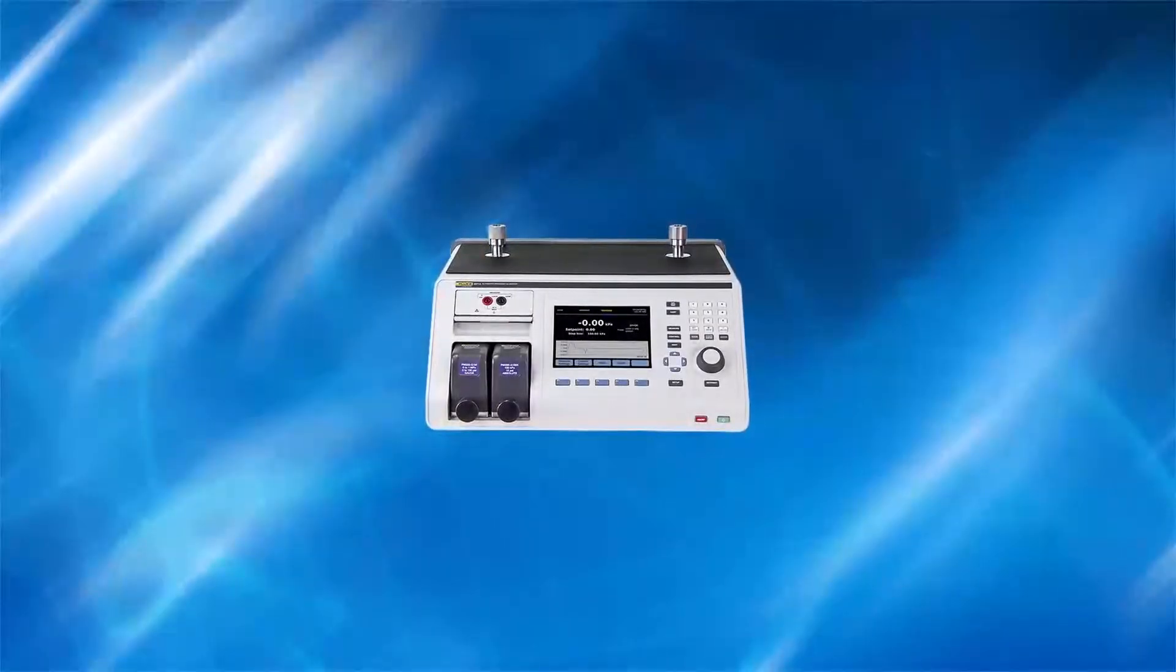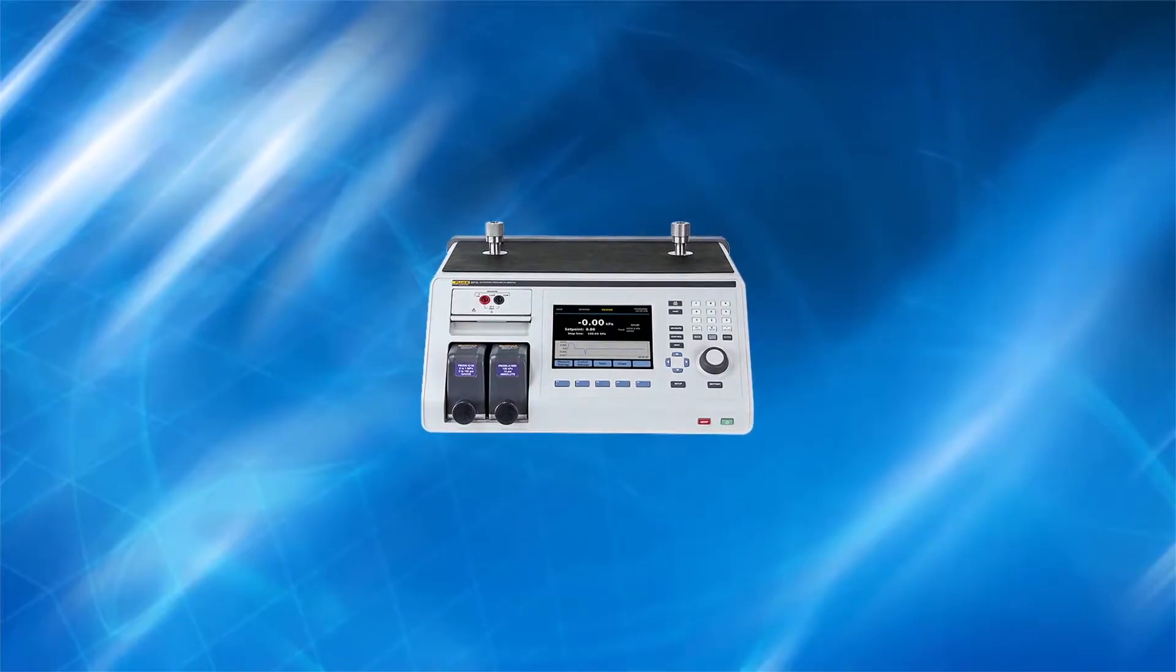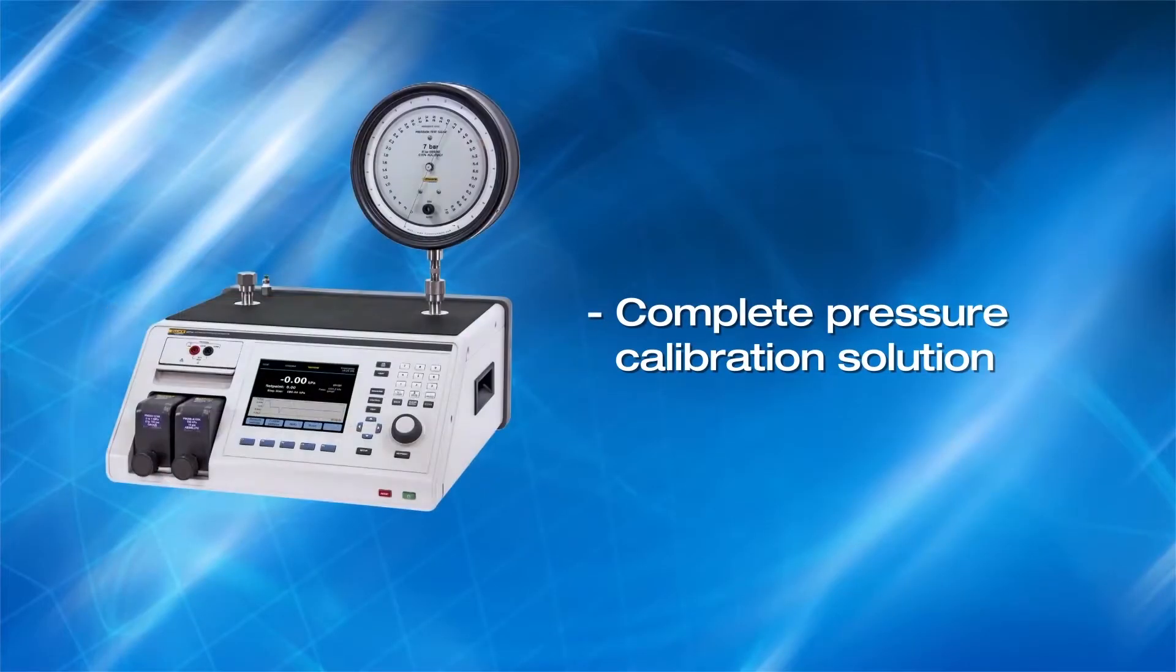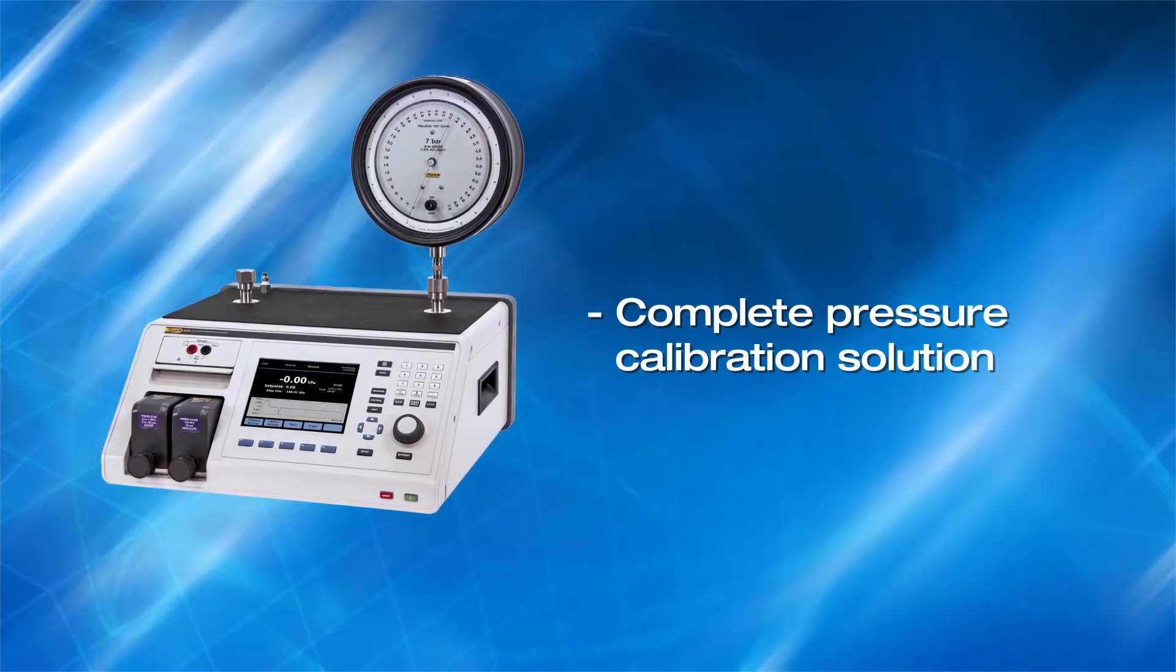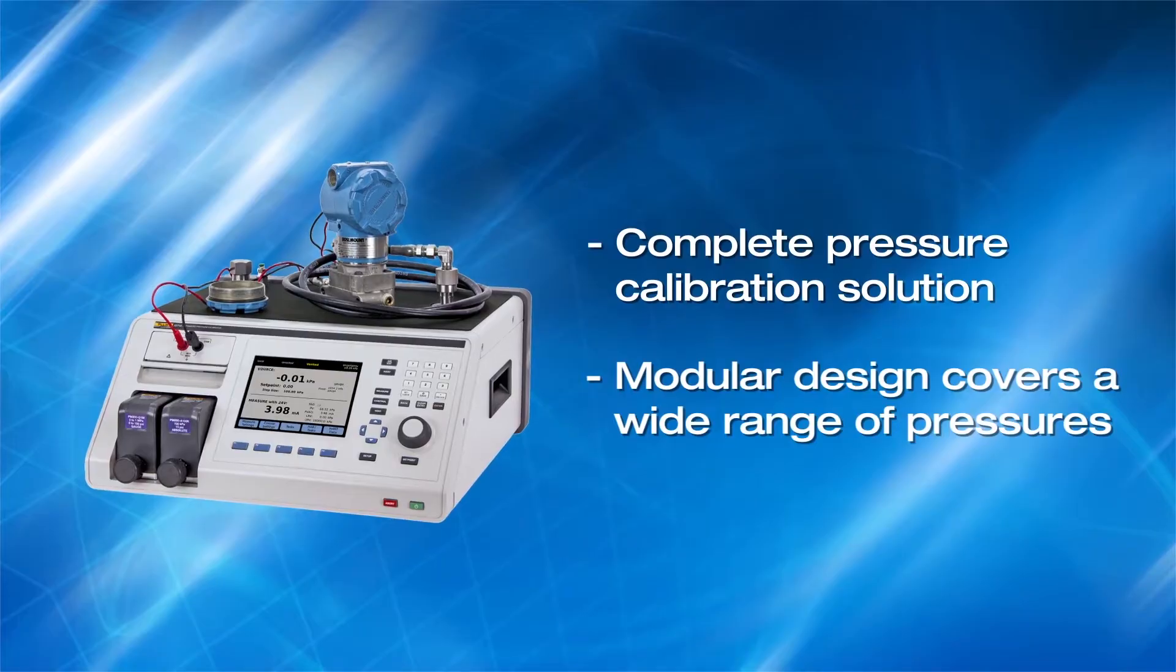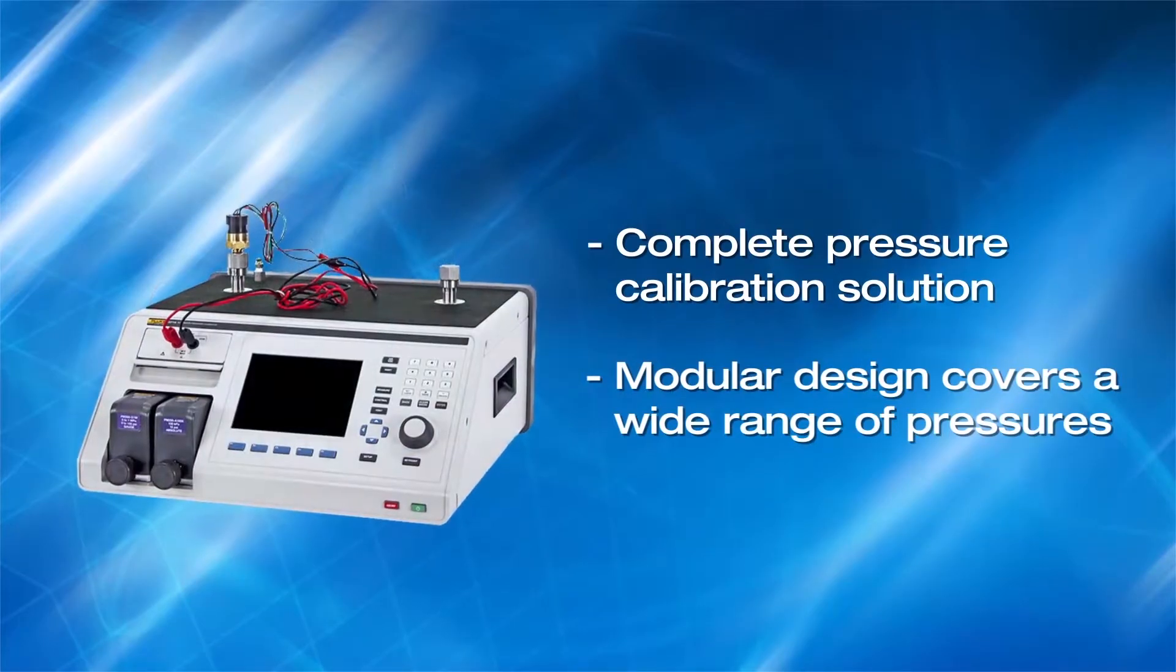The Fluke Calibration 2271A Industrial Pressure Calibrator is a complete solution for calibrating and testing pressure gauges, transmitters, and switches. Its modular design enables it to cover a wide range of pressures.